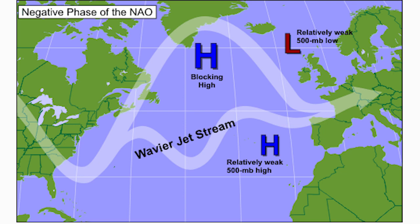In the negative phase of the NAO you can see the opposite: a relatively weak 500-millibar high pressure system over the Azores and relatively high pressure where the low pressure system usually is. You can see that low pressure system moves eastward over Europe. This is a very negative NAO look — a high pressure system where the low usually is, and the low moves quite far east out of the way. That's what we'd call a blocking high, which leads to a much better chance at east coast snowstorms and big troughs in the eastern United States.